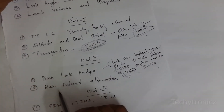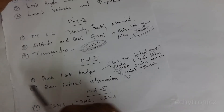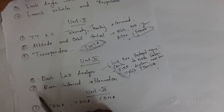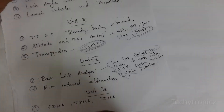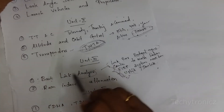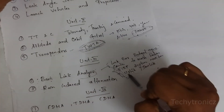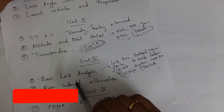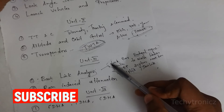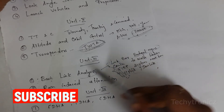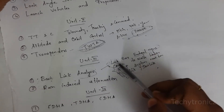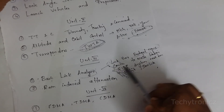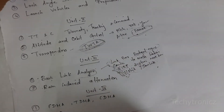The second important question in unit 3 is rain induced attenuation. If you learn these two questions you can attend any one of the questions. Mainly in basic link analysis you will get one question — sometimes they will ask about the link power budget equation, EIRP, or carrier-to-noise ratio.